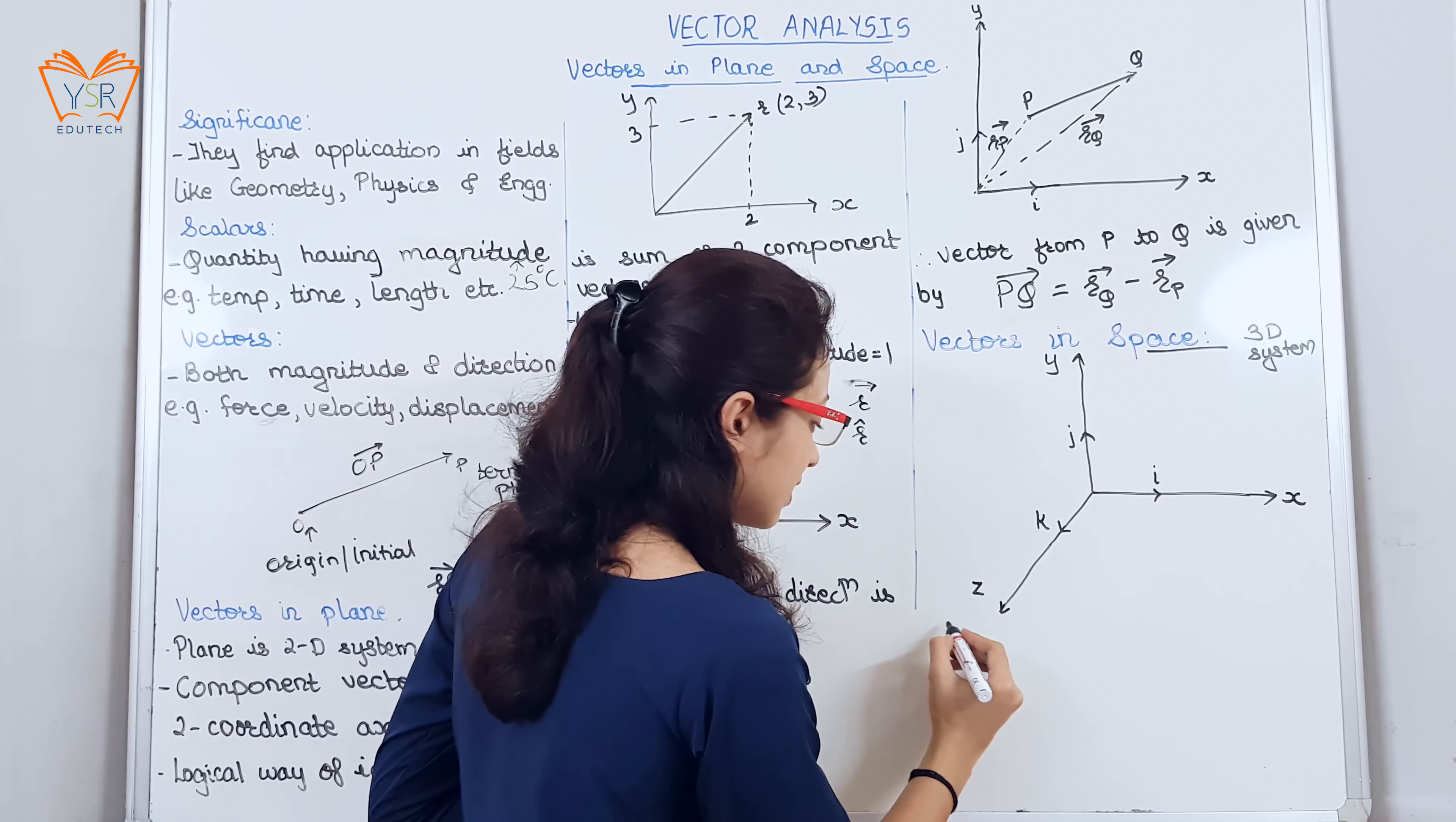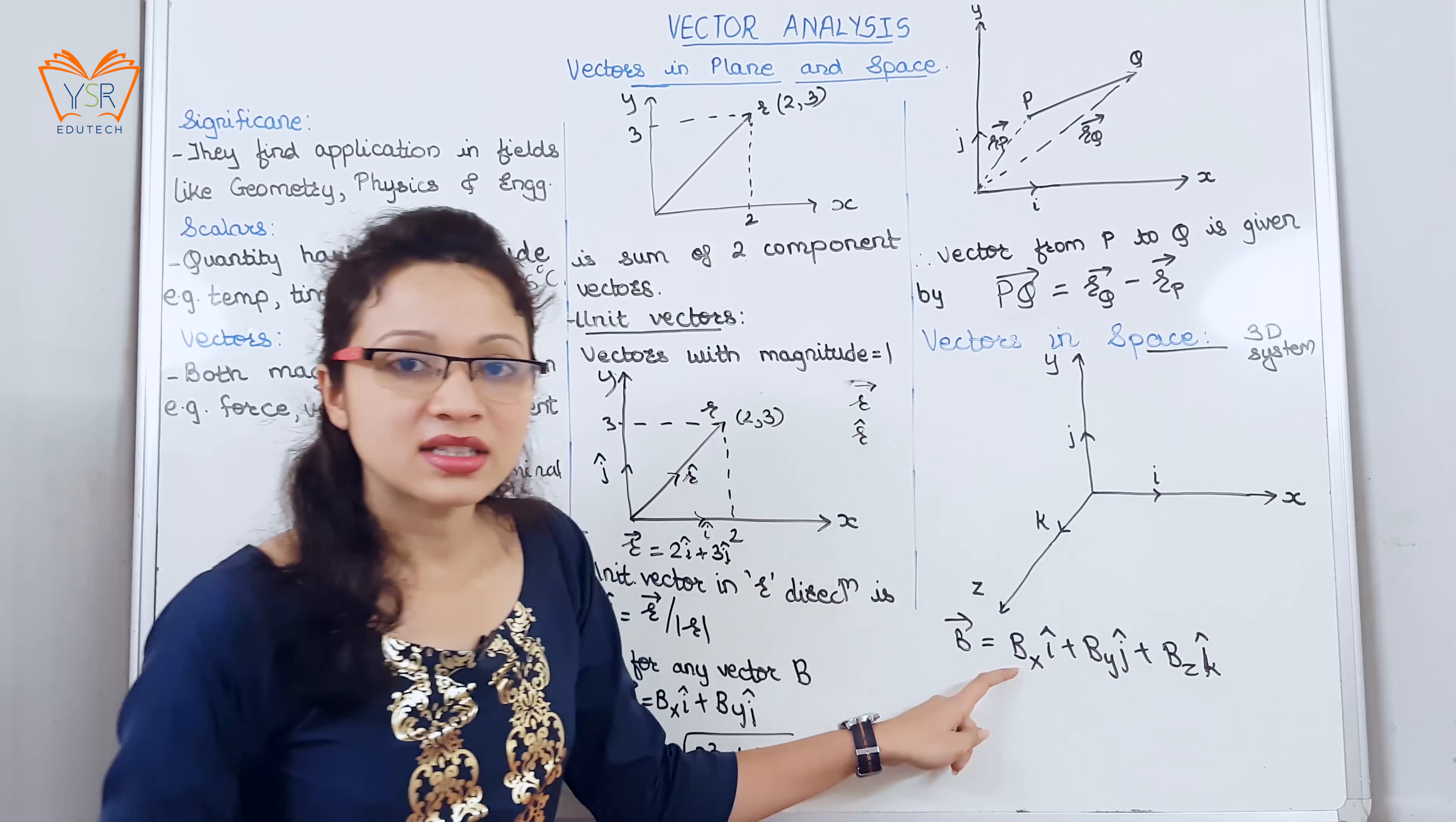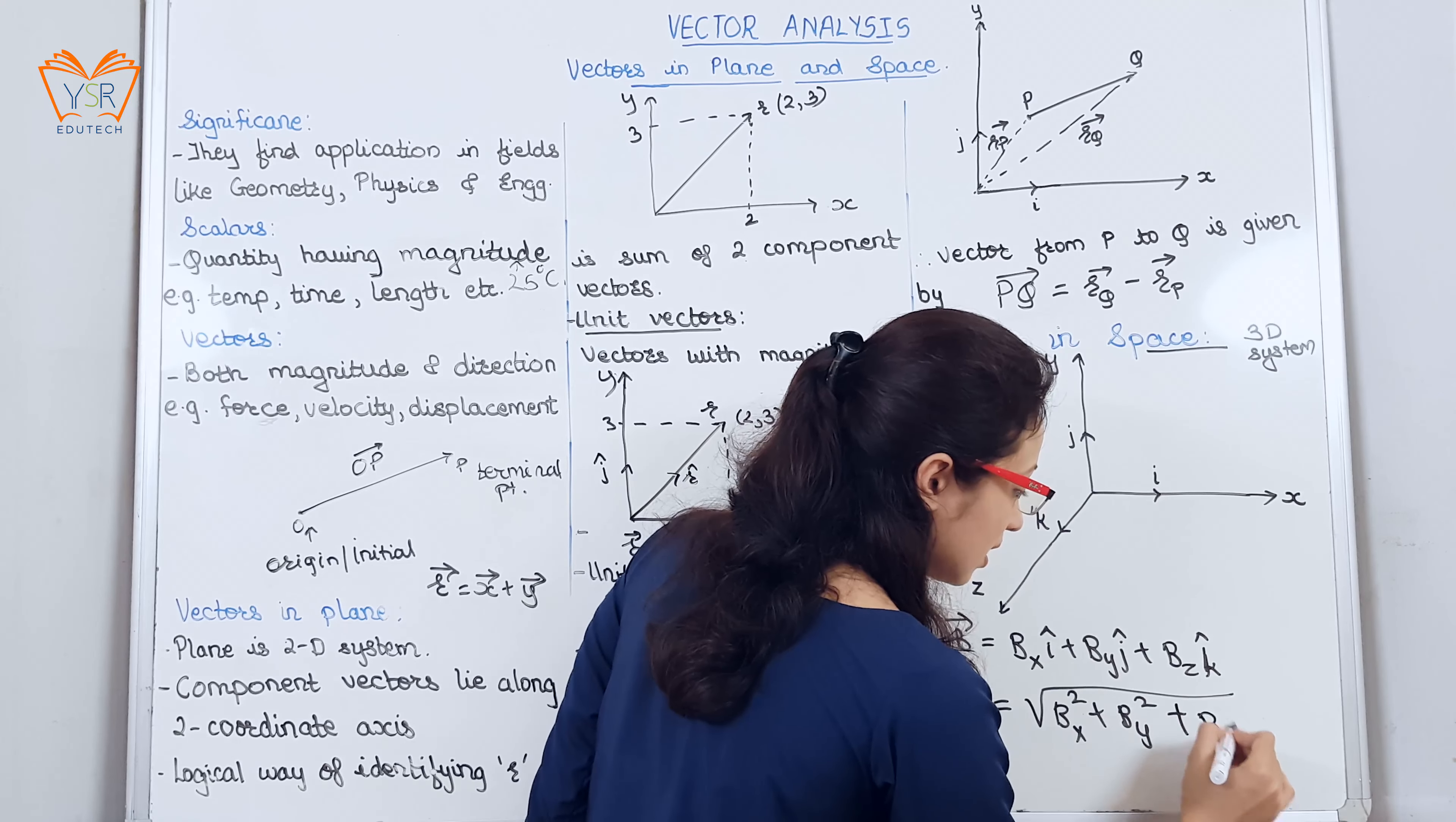So we can write for any vector b, bx i cap plus by j cap plus bz k cap. bx, by, bz are the magnitudes, i cap, j cap, k cap are unit vectors providing magnitude and direction. So the magnitude of b is under root bx square plus by square plus bz square.